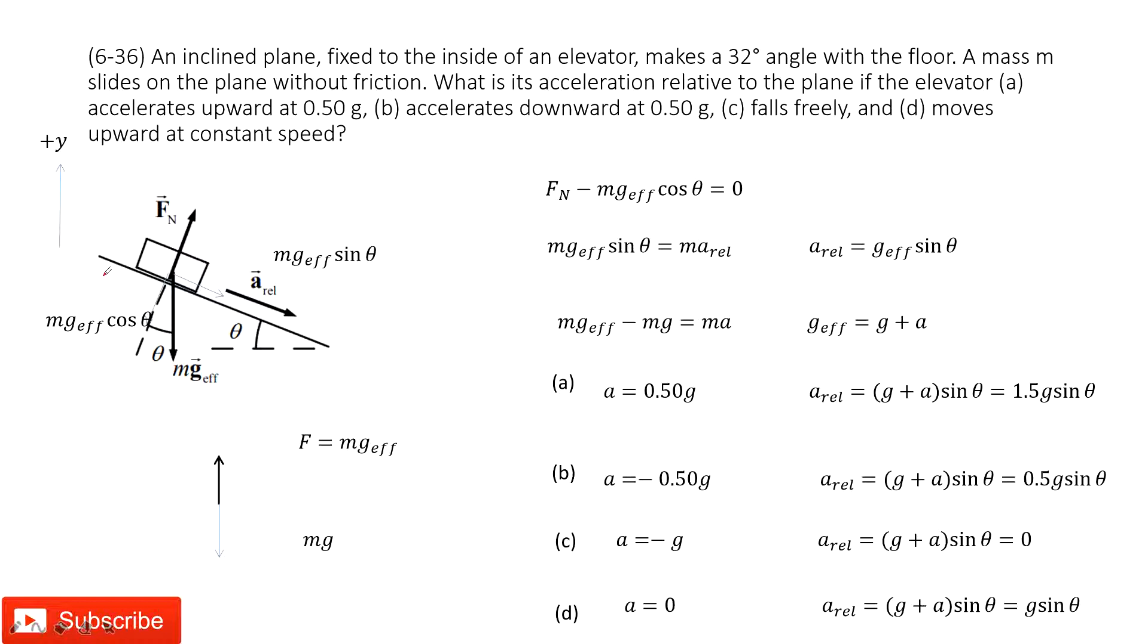First, we do the same thing. We understand the force on this object. There must be gravity acting on this object, right? It is mg. This g is not fixed. It is decided by this reference system, the elevator. So, we give it a name: g effective.